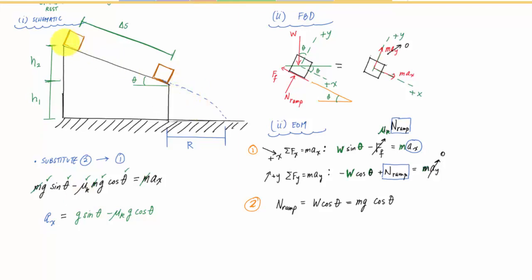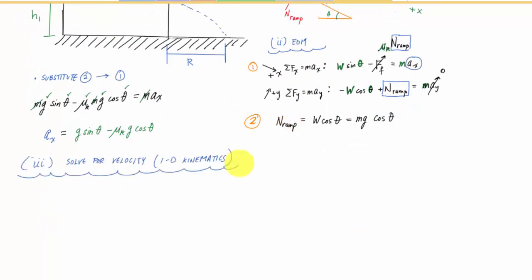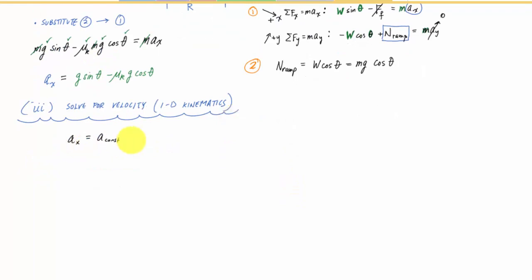Now that I know the acceleration, I've got all kinds of choices to solve for the velocity right before it leaves the ramp. Here in this 1D kinematics, I have acceleration ax, which is a constant — just a number. That means I can use all these 1D motion equations. As a quick refresher: velocity as a function of time, and if I combine equations to get rid of time, I get Vx² = V0x² + 2·ac·Δs, where xf minus x0 is delta s, the change in position.